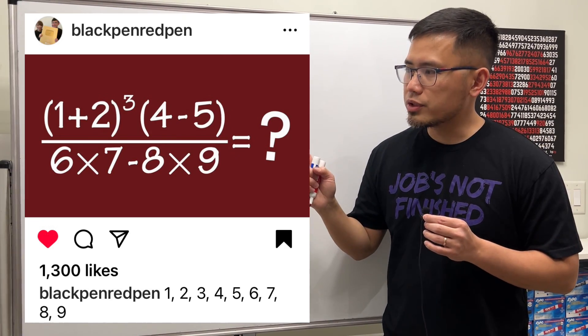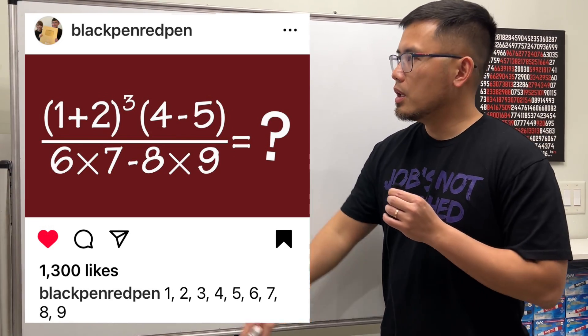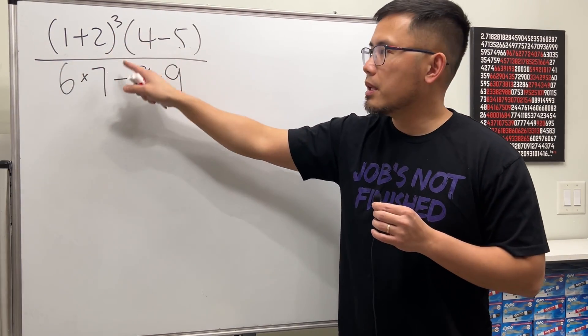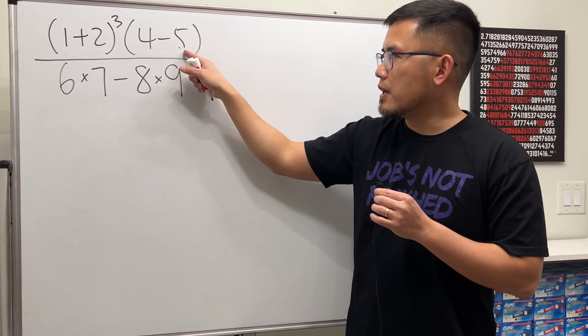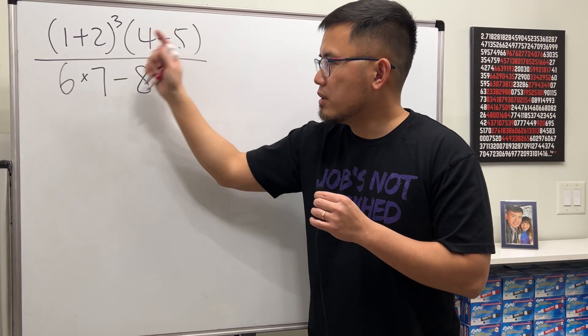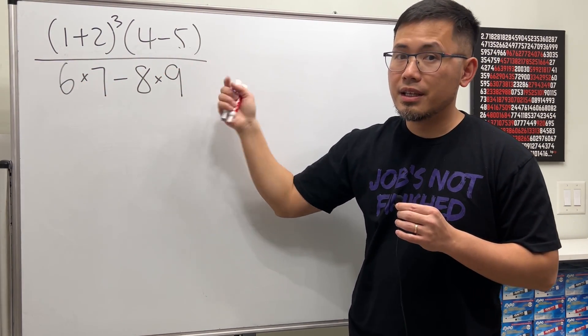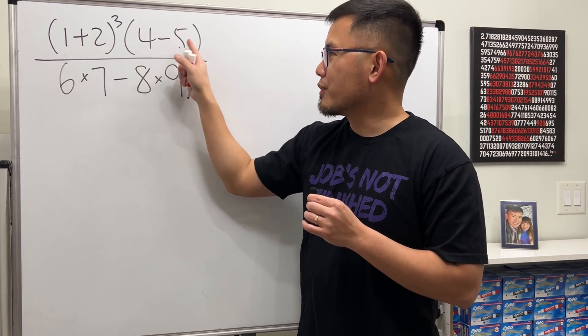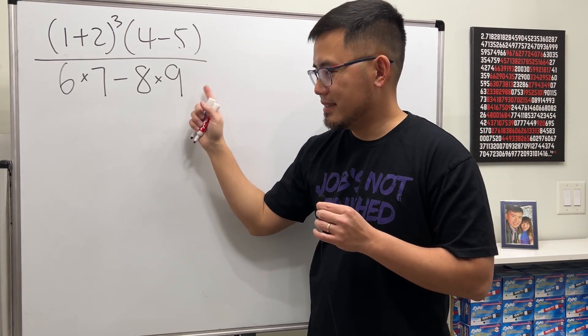So here's the solution to this question that I posted on my Instagram. We have (1+2)³ and then (4-5) inside parentheses, and then over 6×7 - 8×9. Yes, I used one through nine for this question. That's how I like to create my questions whenever possible.